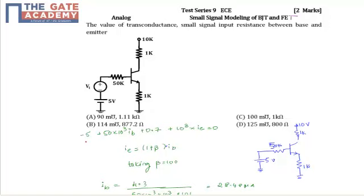So the equation for this given circuit will be: minus 5 plus 50K into IB. This is base and this is collector and this is emitter. So 50K into IB plus 0.7, that is the VBE input voltage, that is minimum input voltage 0.7, and 1K into IE.